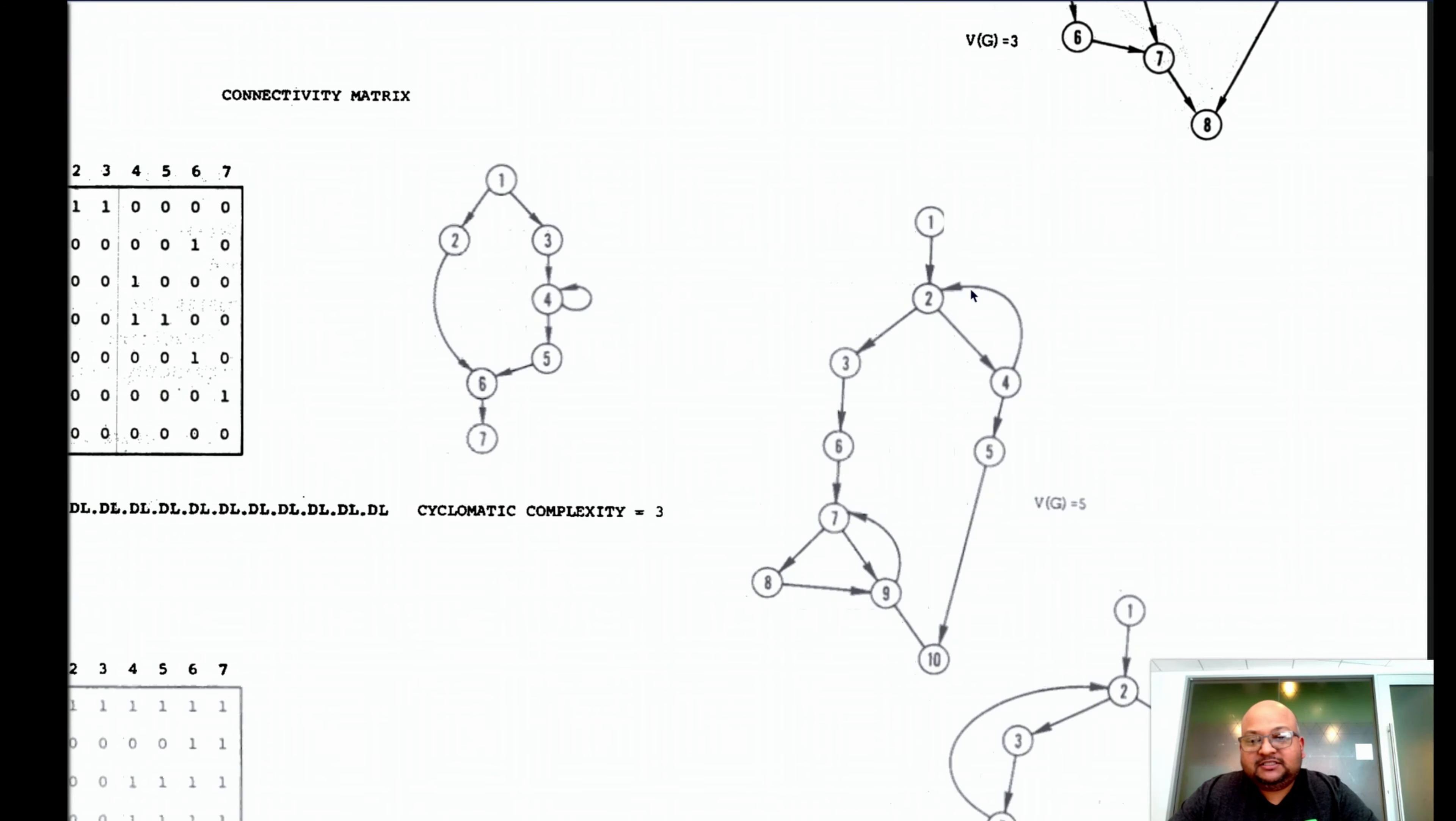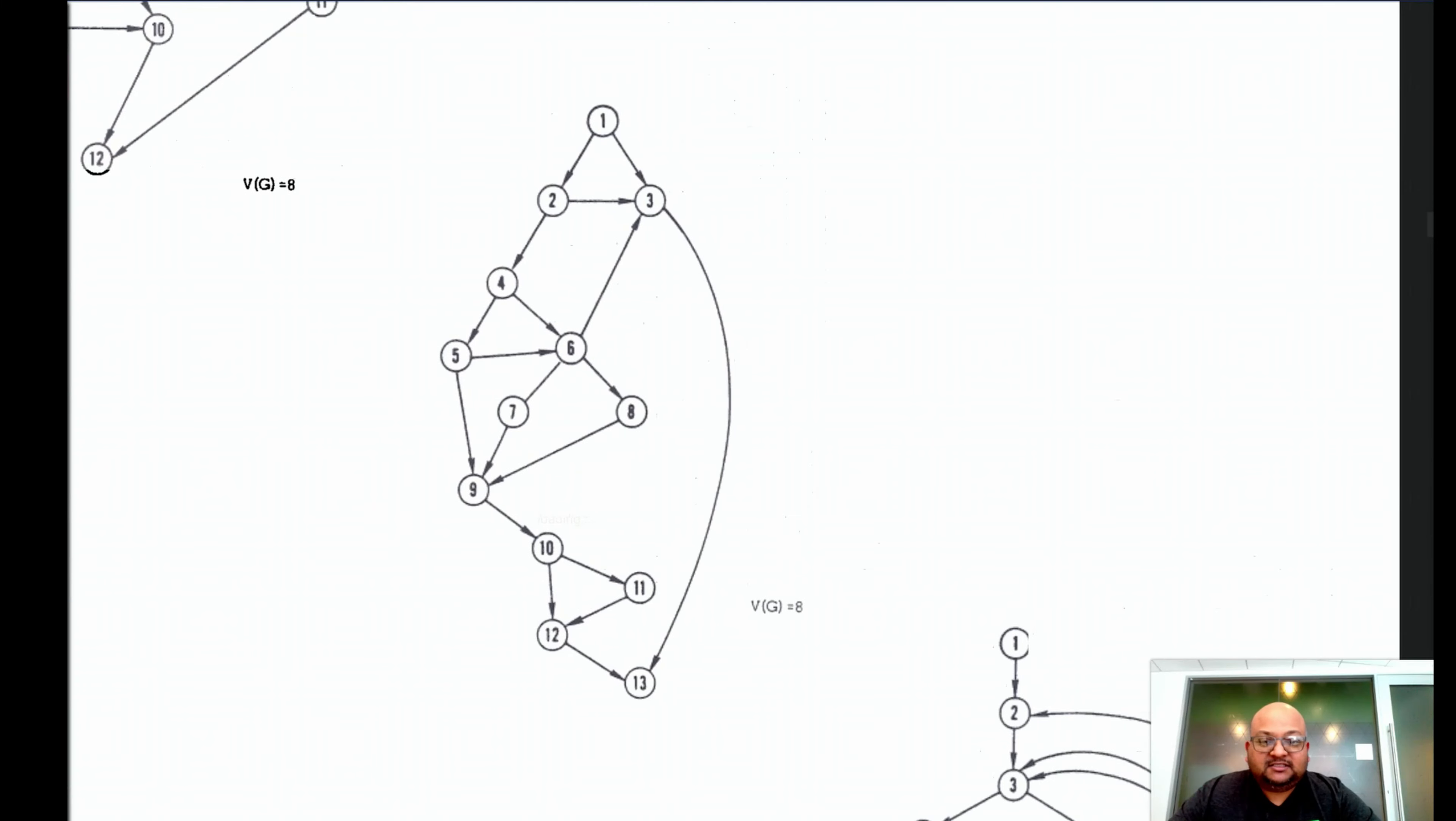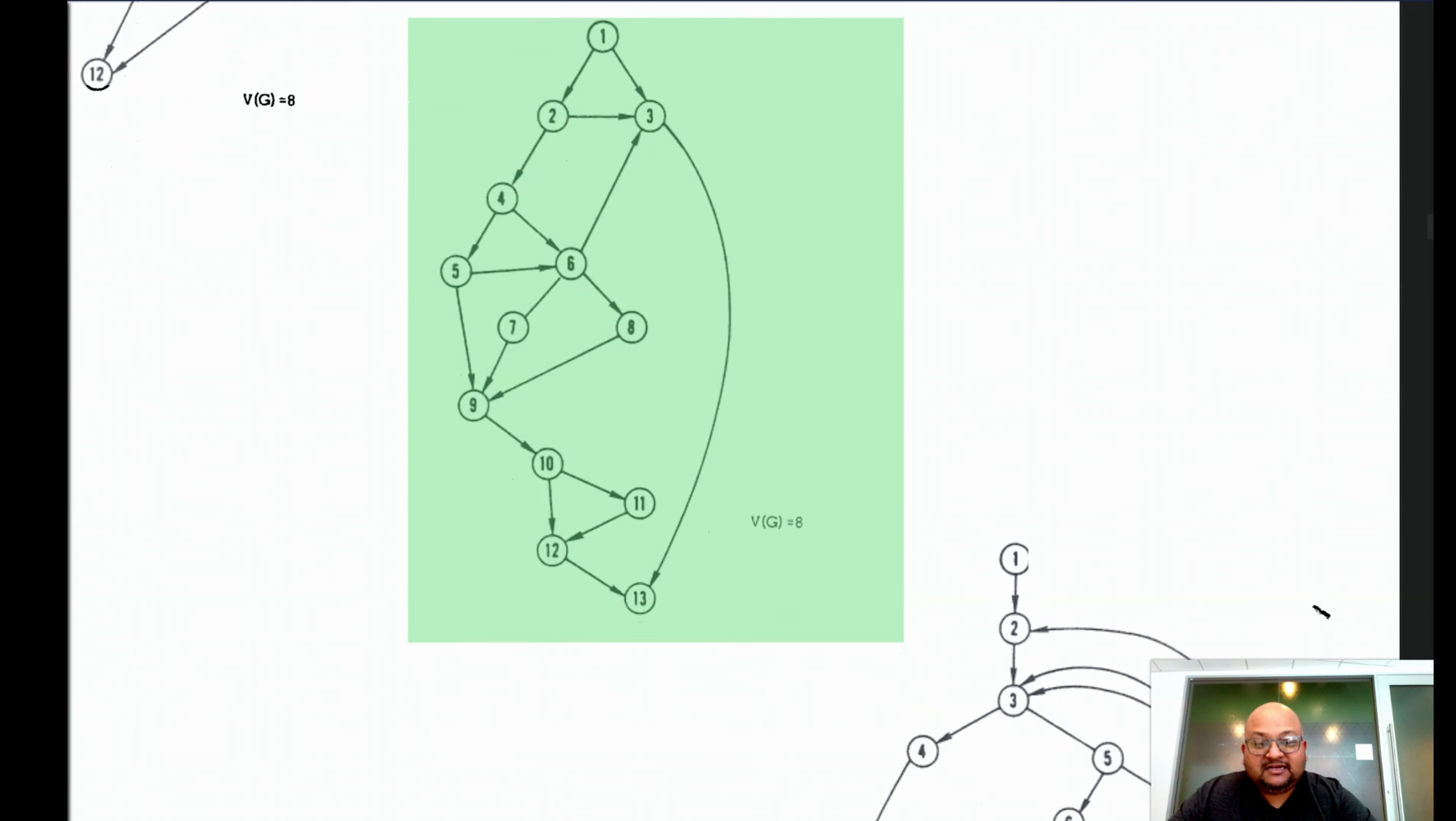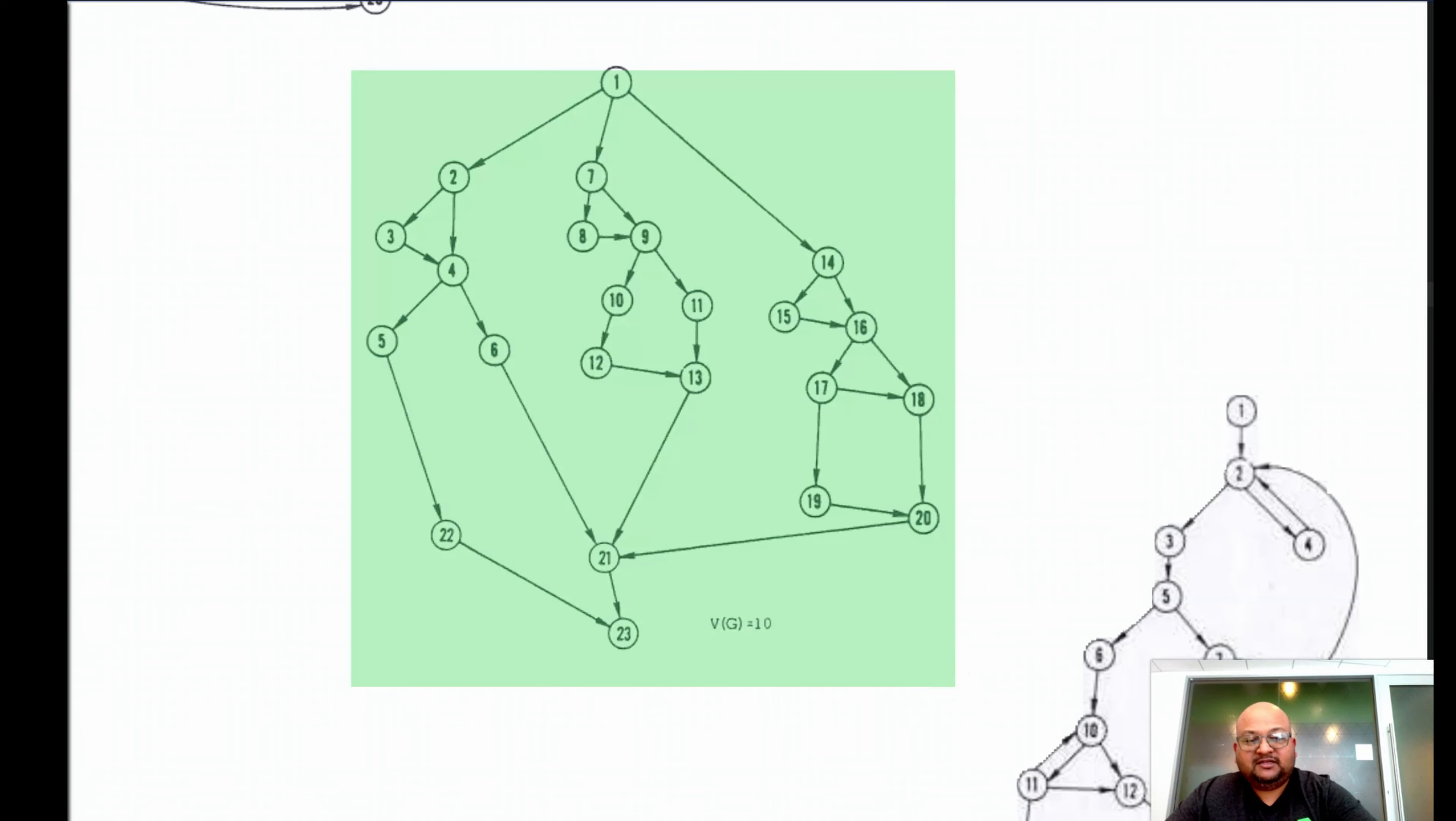The author looks at some example control flow graphs. Some of them are simple like this one that has a cyclomatic complexity of only three. And some of them begin to look much more complex like this one with a complexity of eight or this one with a complexity of 10. I would definitely not look forward to editing a method that had a structure like this.